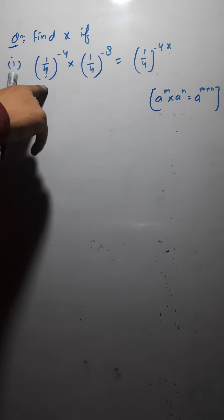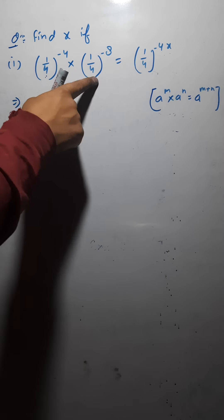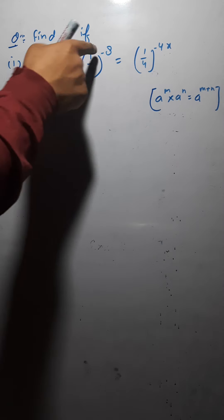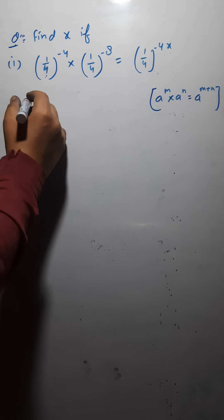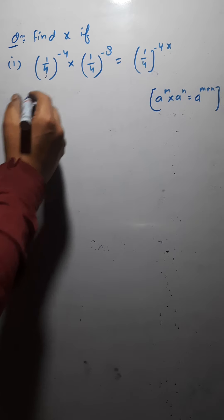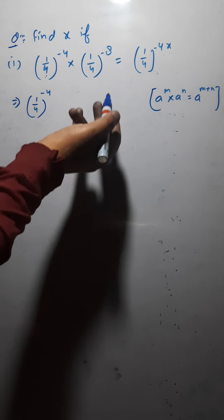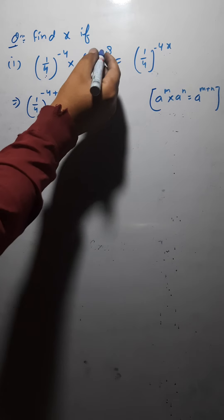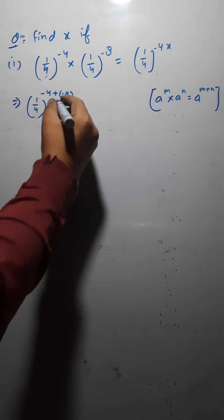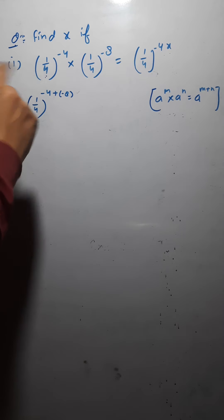So the similar condition is here also. You have the same base 1/4 and 1/4, so the exponents are going to be added. I would write it as (1/4) whole raised to the power minus 4 plus minus 8. This minus 8 I would write inside the bracket.